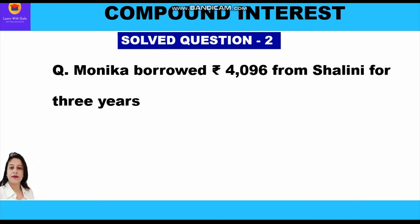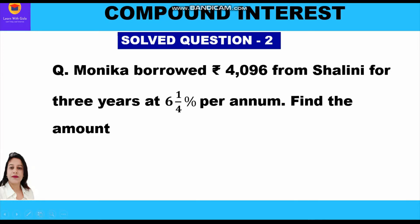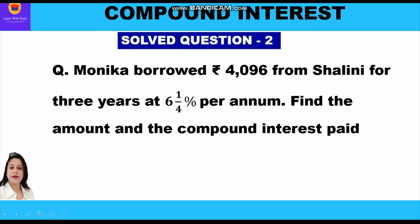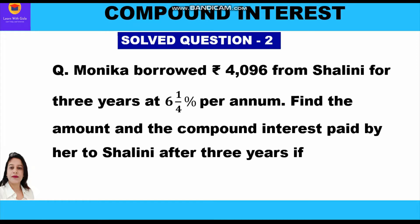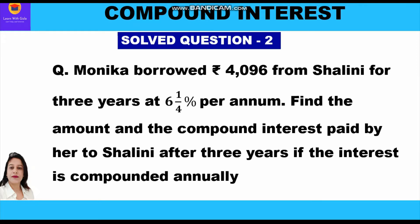Monica borrowed rupees 4096 from Shalini for 3 years at 6¼ percent per annum. Find the amount and the compound interest paid by her to Shalini after 3 years if the interest is compounded annually.